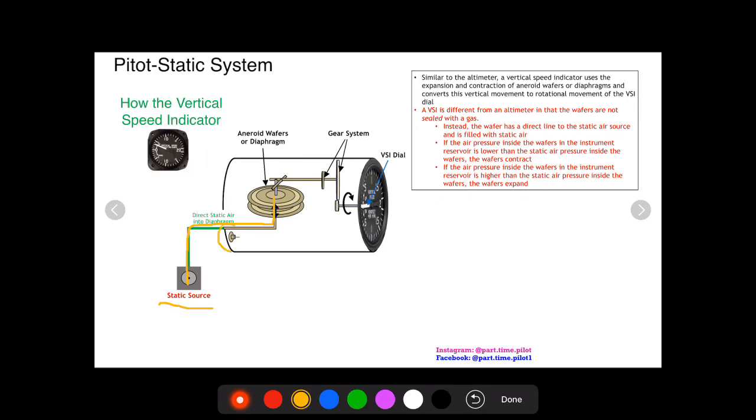Also, there is a nozzle on the vertical speed indicator, and this nozzle lets in static air to surround the wafer. So you have static air inside the wafer and static air outside the wafer. When the static air inside the wafer is higher than the static air outside the wafer, so you have higher pressure inside than outside, that higher pressure wants to get out of the wafer and makes it expand. And then the opposite is true when that pressure inside the wafer is lower than the pressure outside the wafer. The pressure outside wants to get in, so it creates a force on the outside making it contract.